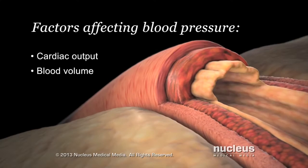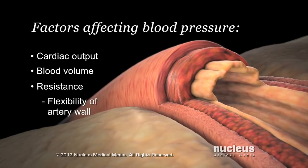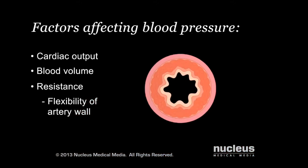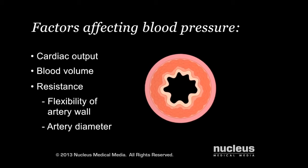The third factor that affects your blood pressure is resistance, which is anything working against the blood flow through your arteries. One resistance factor is the flexibility of your artery wall — healthy arteries expand with each heartbeat to help reduce blood pressure. Another resistance factor is the diameter of your arteries; your body can increase the diameter to lower blood pressure, or reduce the diameter to raise it.